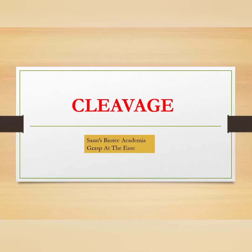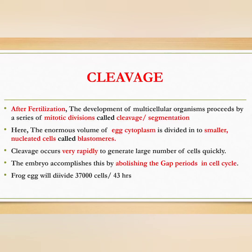Welcome to Sinus Biotech Academia. In this video we are going to discuss embryonic cleavage. Soon after fertilization, the activated zygote or fertilized egg passes through a series of mitotic cell divisions. This process of repeated cell division of a zygote is known as cleavage or segmentation. The egg cytoplasm is divided into smaller nucleated cells called blastomeres. Blastula is an embryonic structure composed of blastomeres, and the cavity within the blastula is known as the blastocoele.